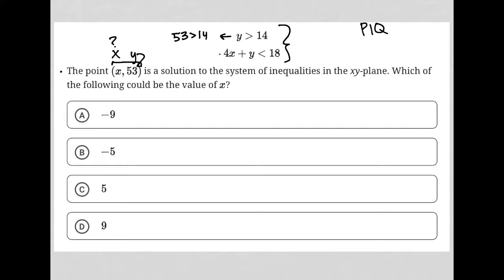Let's check out the second inequality. That would give me 4x plus 53 is less than 18. I can then subtract 53 from both sides. So 18 minus 53 is negative 35. So I'm left with 4x is less than negative 35.